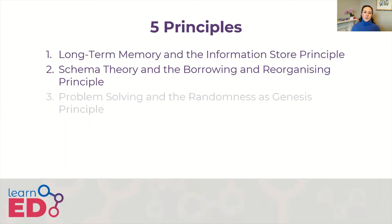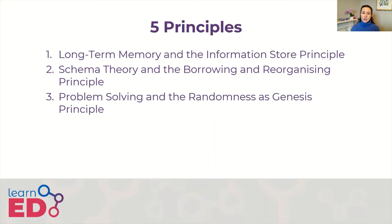The randomness as genesis principle: when there is no information available, I have to figure out the answer to a problem through experimentation. If some knowledge is available I might prioritise possible solutions, but if no information is available then I will try things one by one, each time altering my current schema. This is a slow and laborious way to learn and has implications for learning theories such as discovery learning.